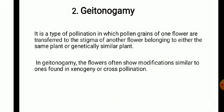Geitonogamy is a type of self-pollination in which pollen grains of one flower are transferred to the stigma of another flower belonging to either the same plant or a genetically similar plant. In other words, pollination occurs between two flowers on the same plant, which is referred to as geitonogamy — commonly called neighbor pollination because pollination occurs between neighboring flowers.